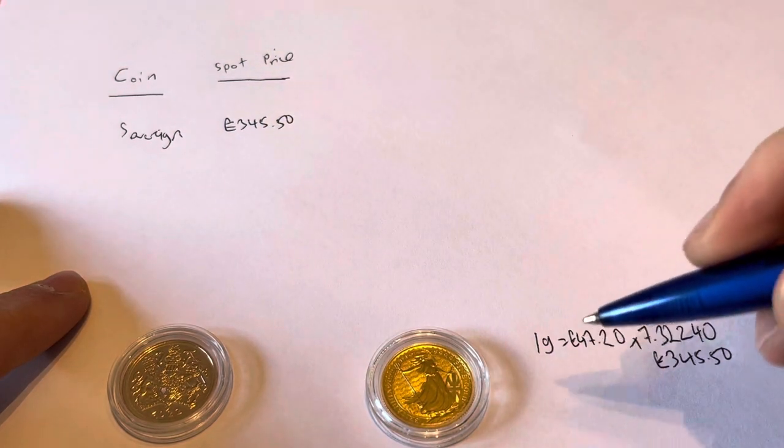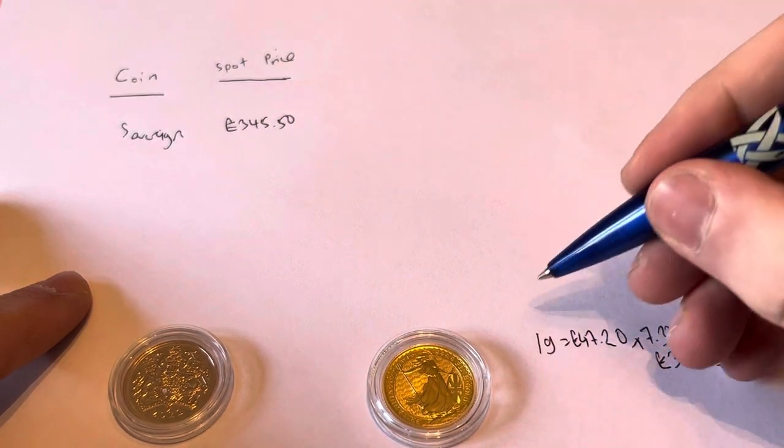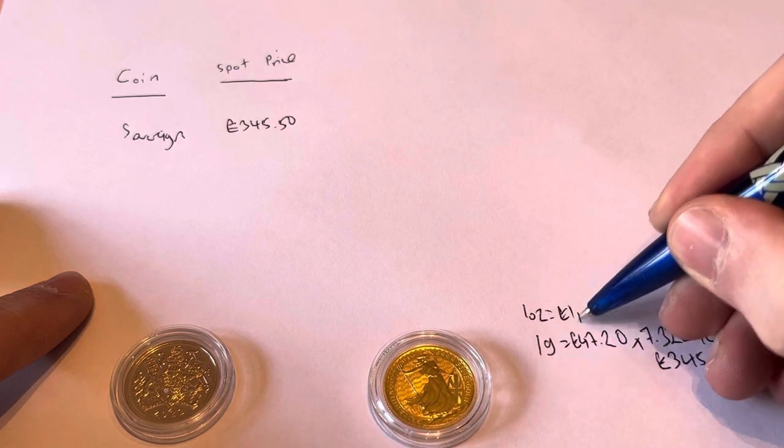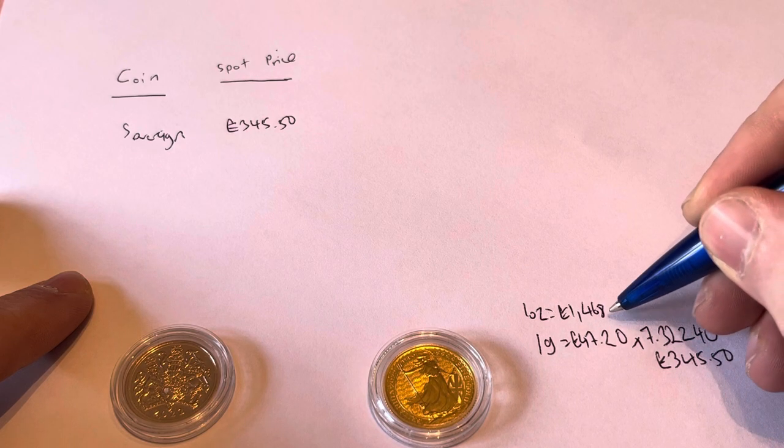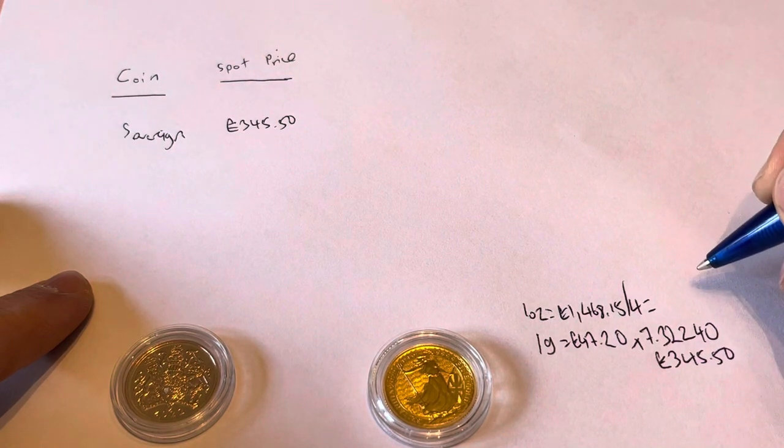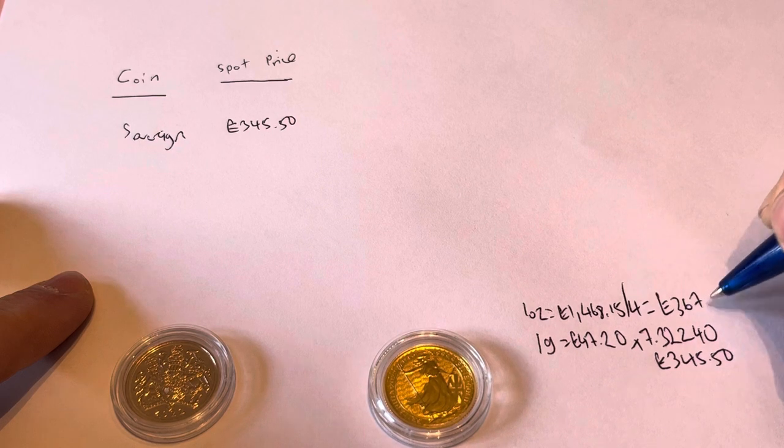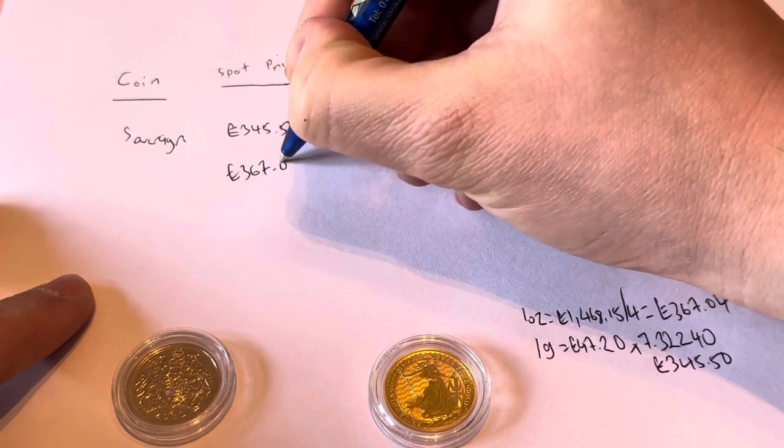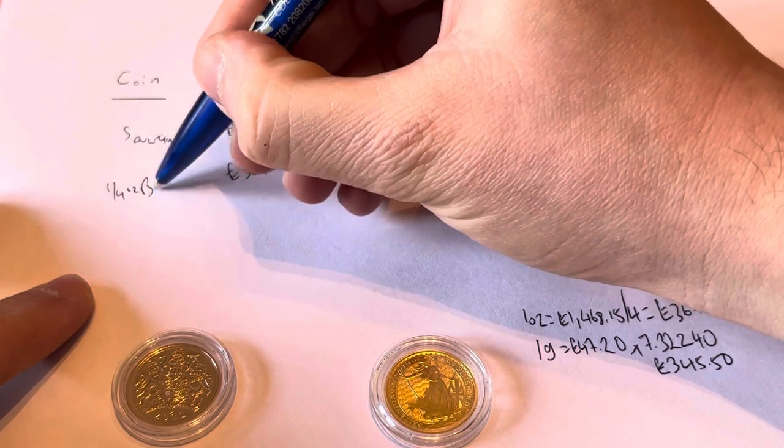And then on the quarter ounce Britannia, at the moment today, an ounce of gold spot price is £1,468.15. So if we divide that by four, and luckily I've prepared this before the video, we get £367.04. So that's the quarter ounce Britannia.